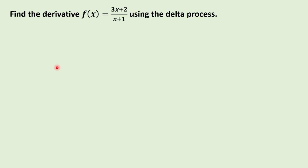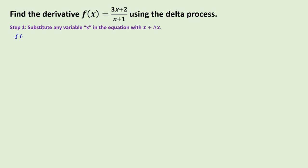Let us find the derivative of the rational function 3x plus 2 over x plus 1 using the four-step delta process. For step one, we find f of x plus delta x by substituting x plus delta x into the equation. We have 3 times x plus delta x plus 2 over x plus delta x plus 1.